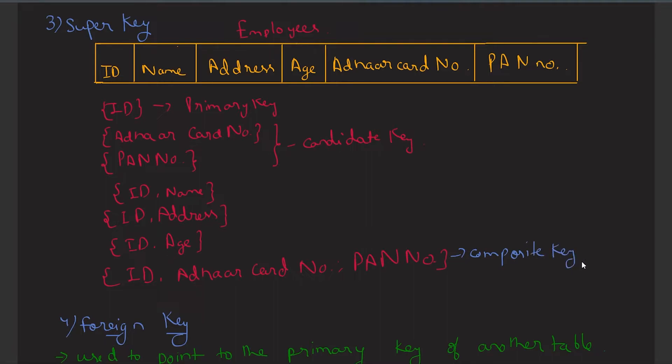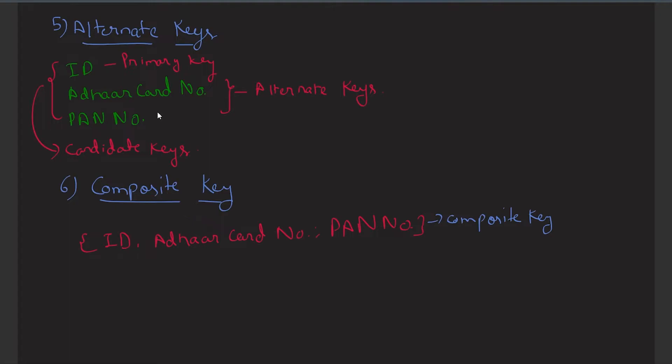Sometimes it is better to create a primary key not based on a single attribute but by combining two or more attributes that can uniquely identify the record of the table. If we combine two or more attributes, then the key will be called as a composite key. Simple definition: if we combine two or more attributes in a key, then that key will be called a composite key.